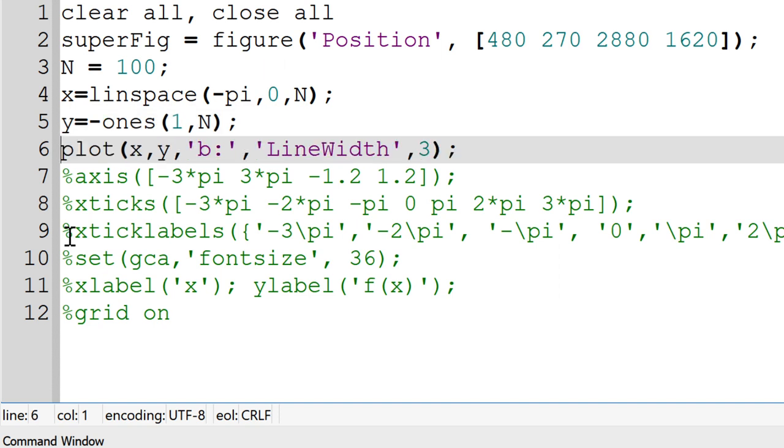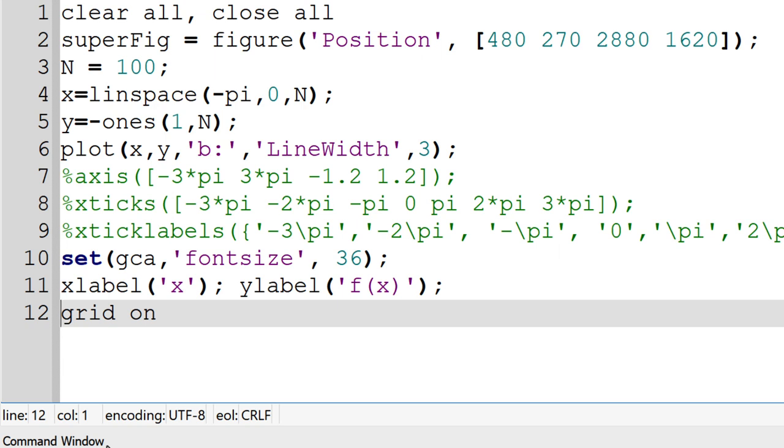We can plot fx at minus pi to 0 using a built-in function plot. I also use a blue dotted curve and increase line thickness to 3 by using line width 3. I also add x and y labels and increase the font size to 36 since the default font size is too small to read.